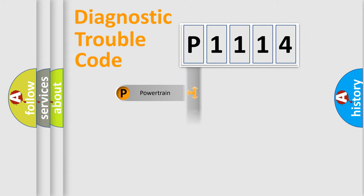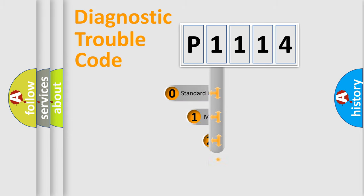Powertrain, Body, Chassis, Network. This distribution is defined in the first character code.